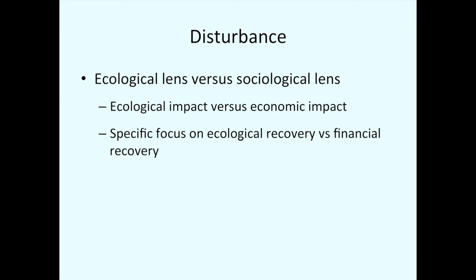Yesterday we were really talking about the physical and biological processes. When you start delving into the dictionaries, disaster always has a social component, whereas catastrophe doesn't necessarily have any social component. So we talk about catastrophic disturbances and we talk about things that are disasters. Today we're going to be looking at disturbance both through an ecological lens and a sociological lens — there's an ecological impact but also an economic impact and other sociological impacts.